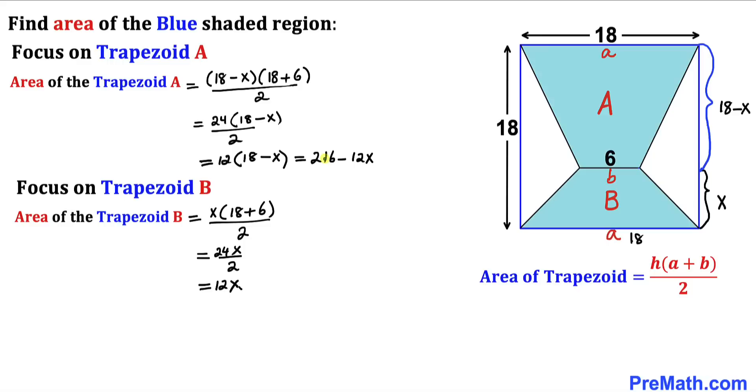Now we can see our area of trapezoid A is 216 minus 12X and the area of the trapezoid B is 12X.